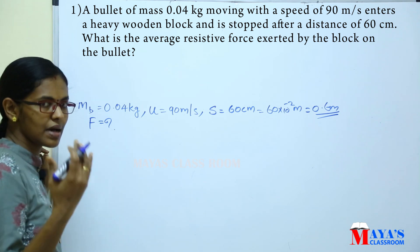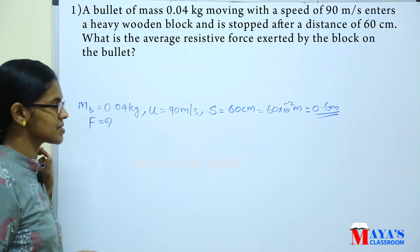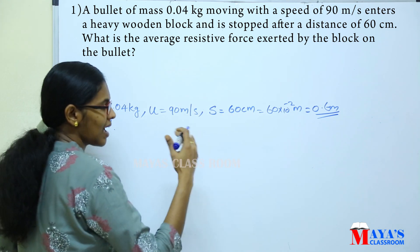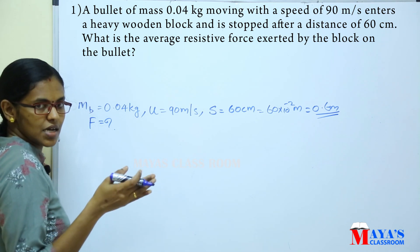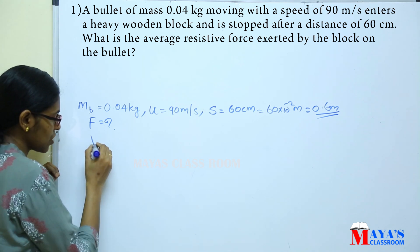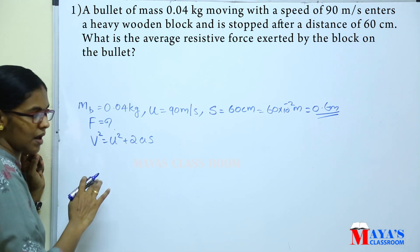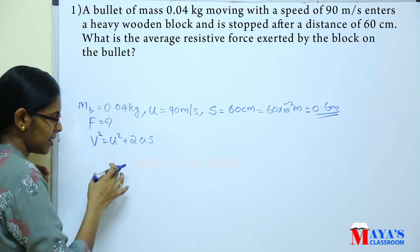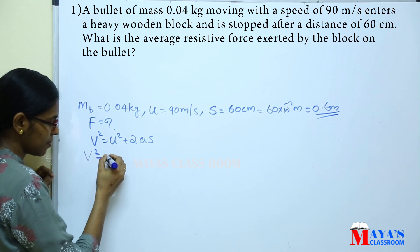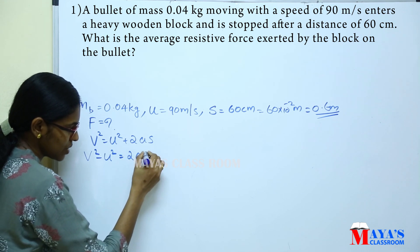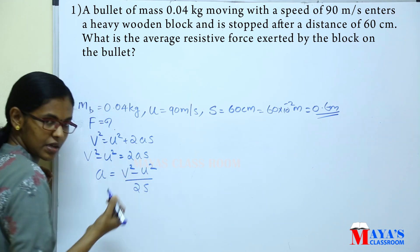Force equals mass into acceleration. To find acceleration, we use the equation of motion: v² = u² + 2as. Rearranging, a = (v² − u²) / 2s.